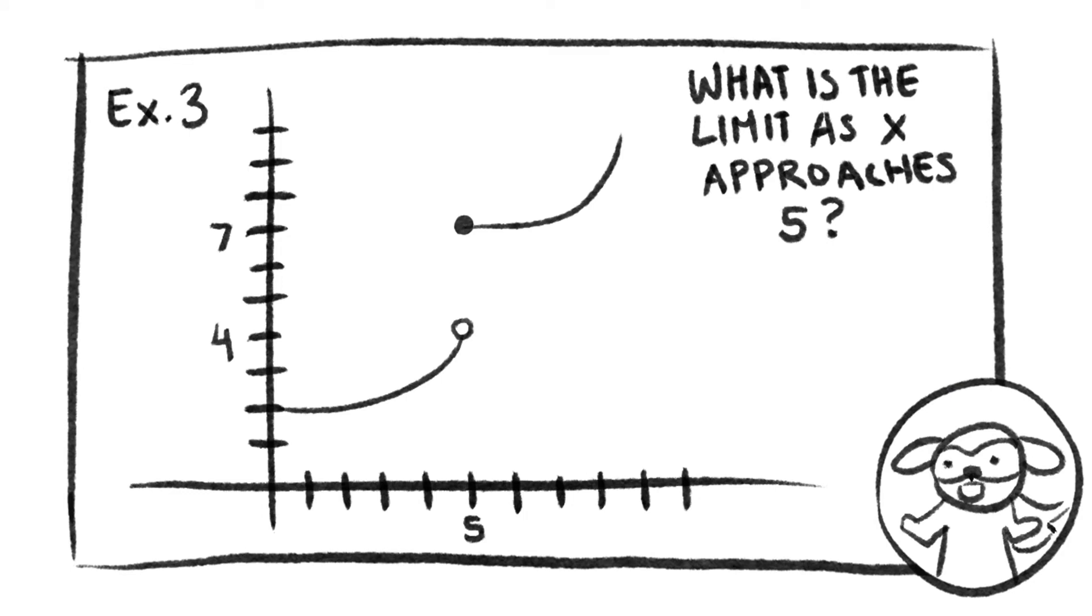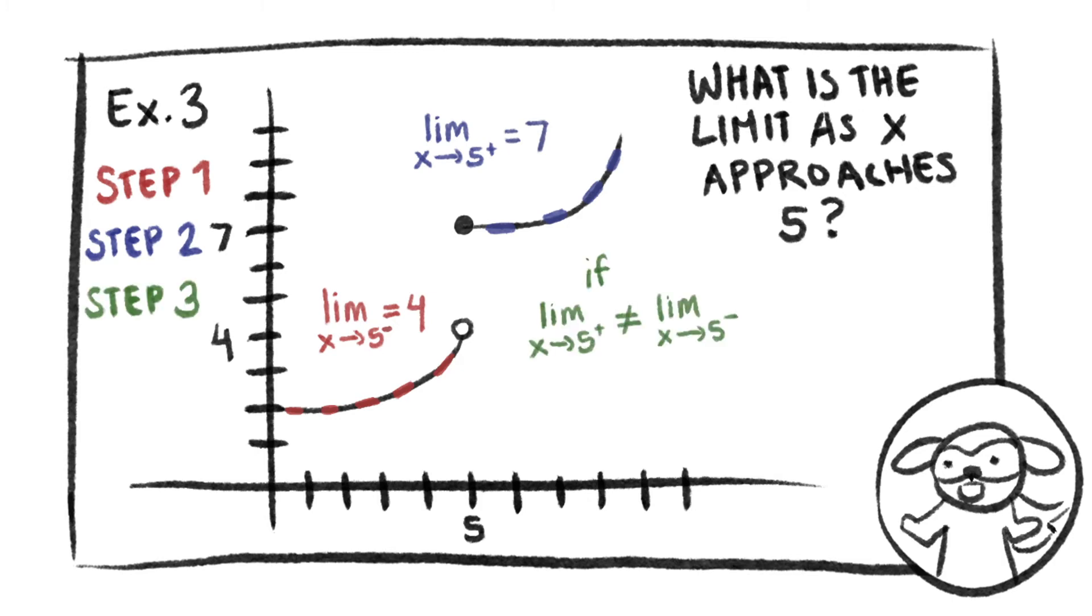Let's try another example. The limit from the left is 4. The limit from the right is 7. Uh oh. They aren't equal. If the limit from the left and the limit from the right are not equal, then the limit as x approaches 5 does not exist, or DNE for short. Good job.